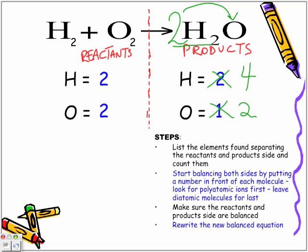We now have four hydrogens on the product side, so we need to increase the number of hydrogens on the reactant side. We put a 2 in front of H2 on the reactant side, which increases our hydrogens to four. Now we no longer need to balance the hydrogens. Comparing both sides: four hydrogens and four hydrogens, two oxygens and two oxygens — we now have a balanced equation.